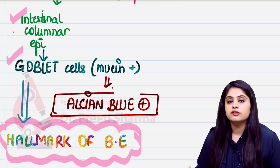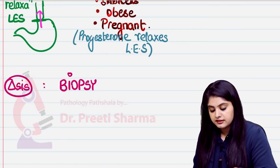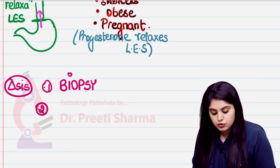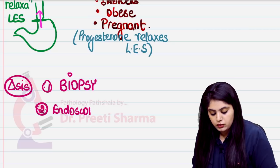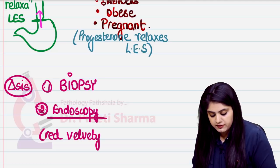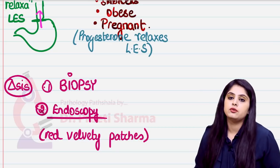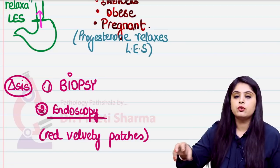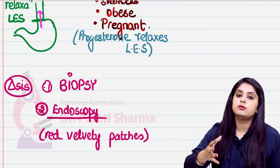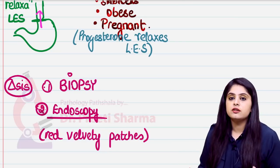The gold standard for diagnosis is biopsy. To take the tissue, you must first perform endoscopy. On endoscopy, the characteristic finding is red velvety patches in the lower esophagus. From these patches, a biopsy is taken, revealing two different epithelia, goblet cells, mucin, and alcian blue positivity — confirming Barrett's esophagus.